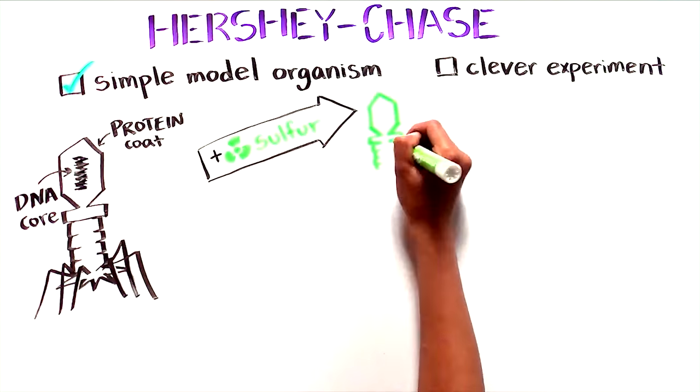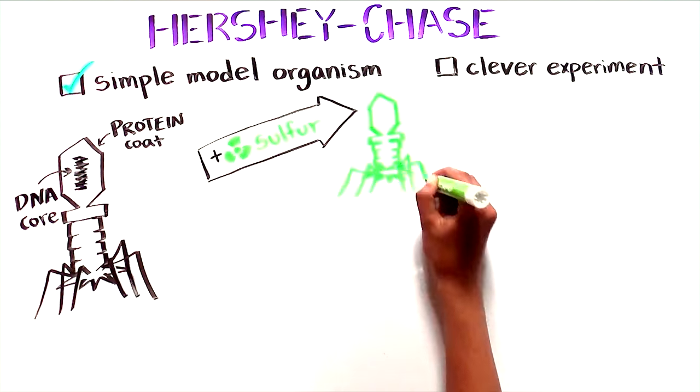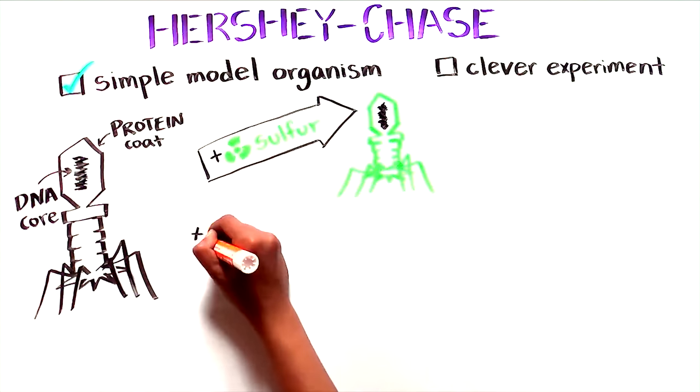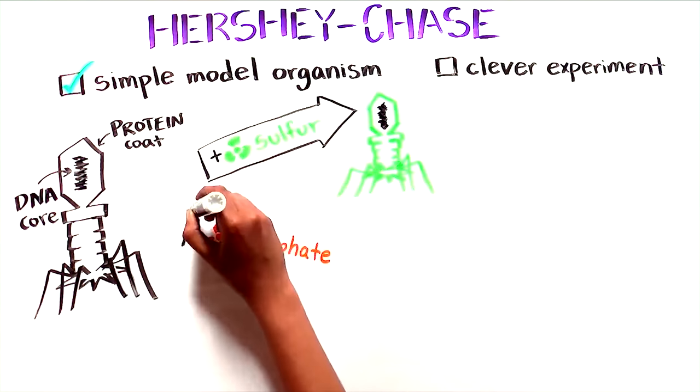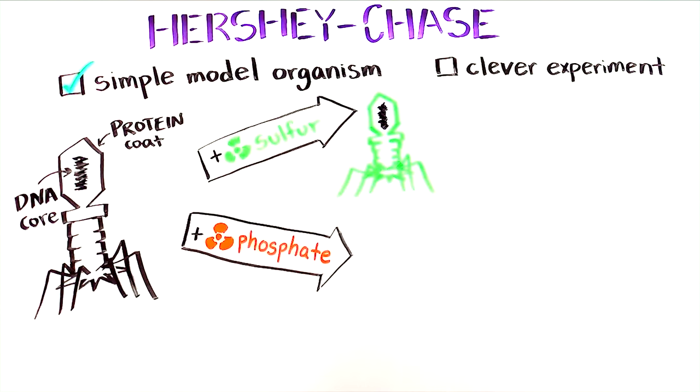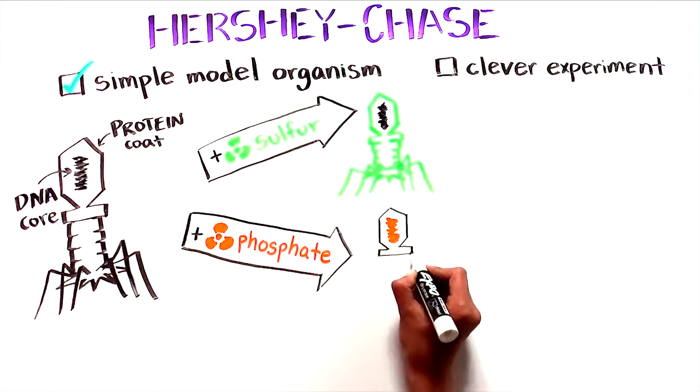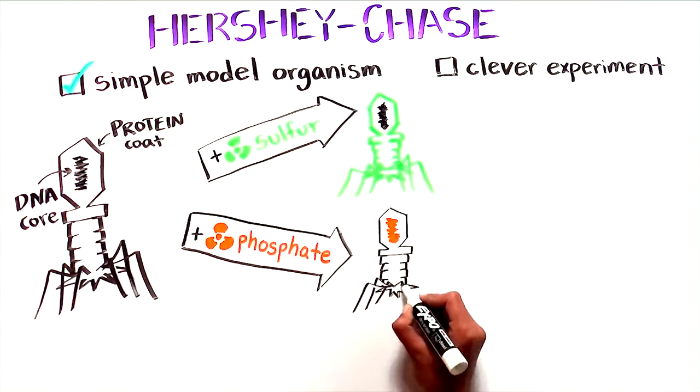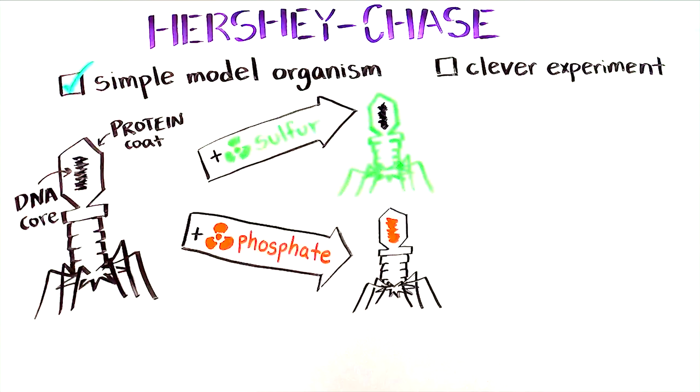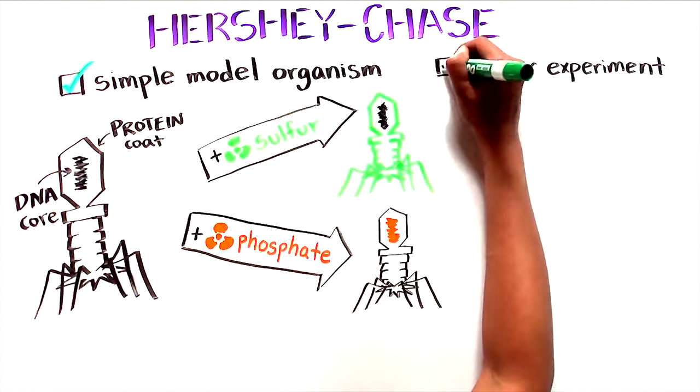For this labeling they used radioactive tags, radioactive sulfur for the protein and radioactive phosphate for the DNA. This was an elegant method because phosphate is only found in DNA and not in the amino acids that make up proteins. And sulfur is only found in proteins and not DNA.